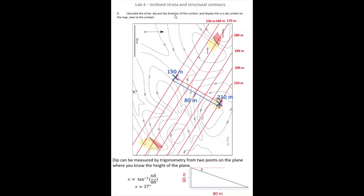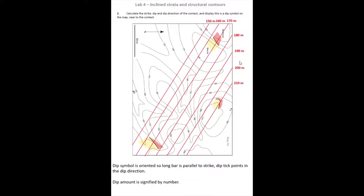We've got strike, dip, and dip direction, and now we need to display this as a symbol. Dip and strike of beds are shown using a long bar with a tick in the middle pointing towards the direction of dip. The long bar is oriented parallel to strike — parallel to our structural contours — with the little tick pointing from high structural contour values to low, and the number recorded is the amount of dip. This single symbol records the strike orientation, dip direction, and amount of dip.